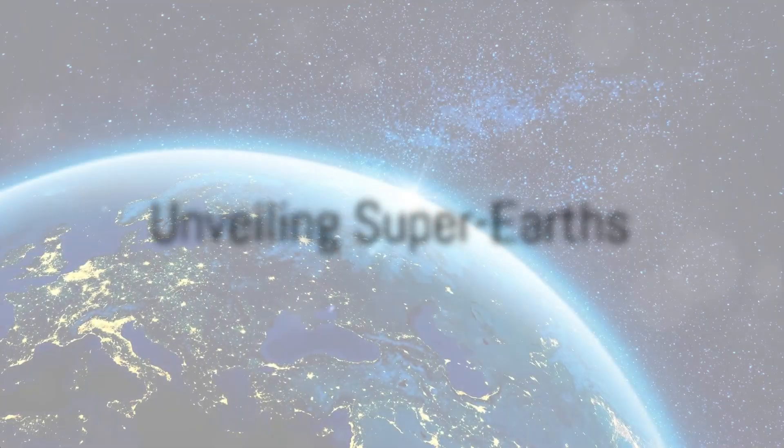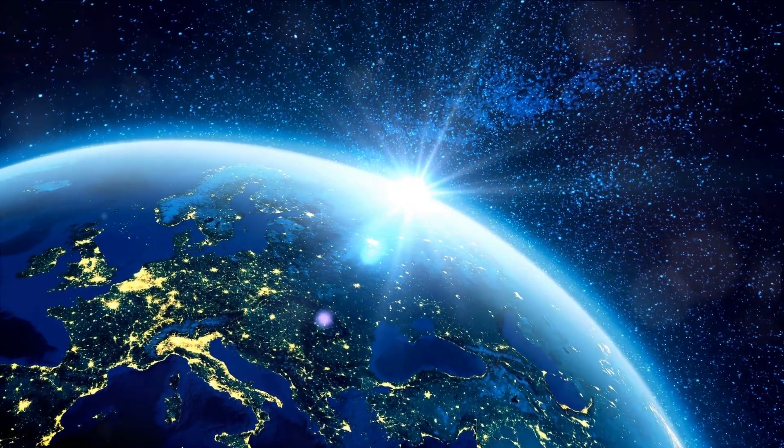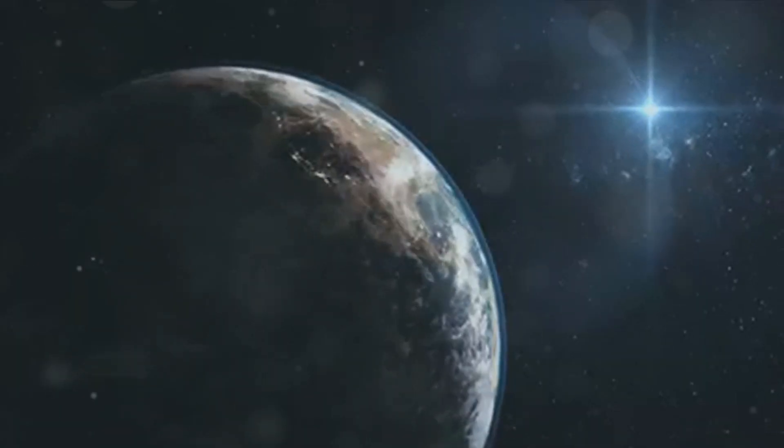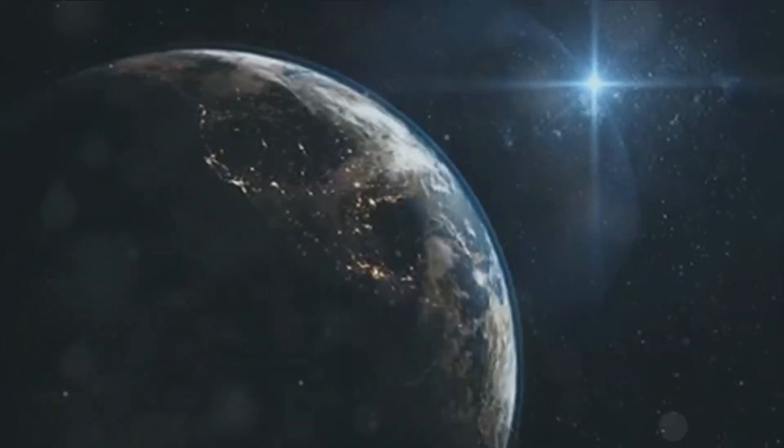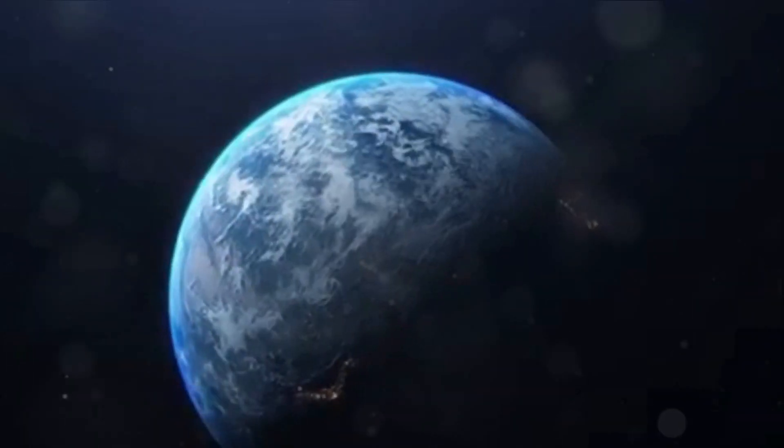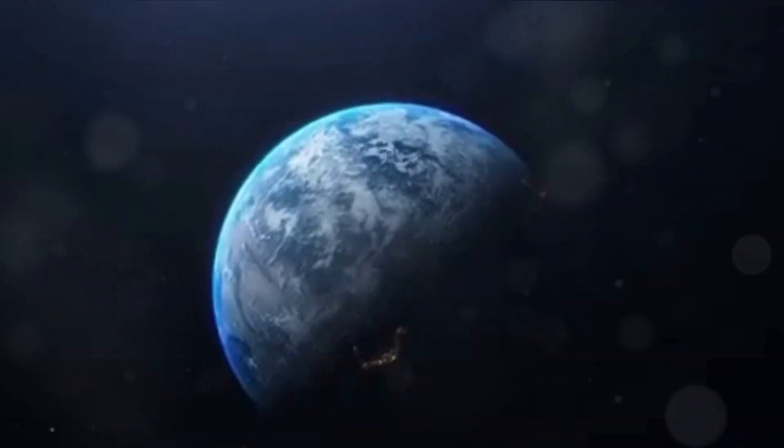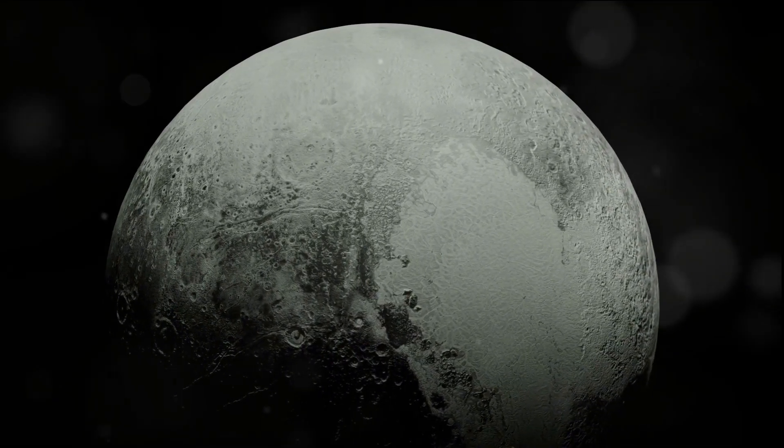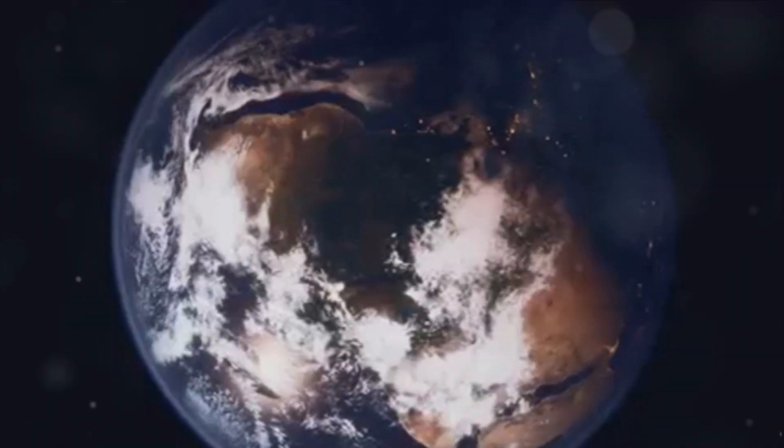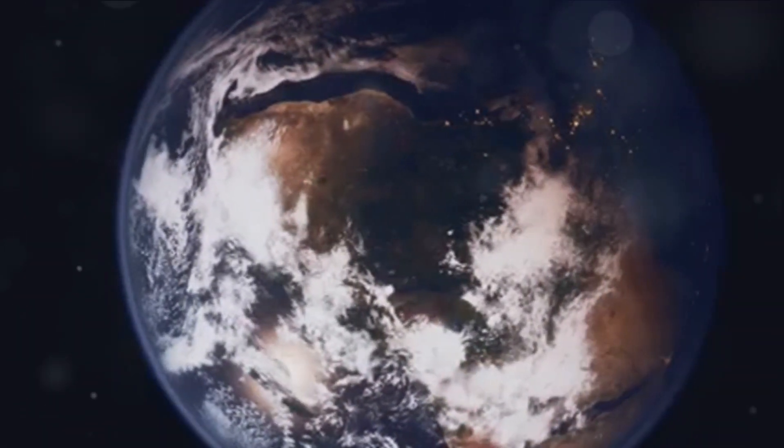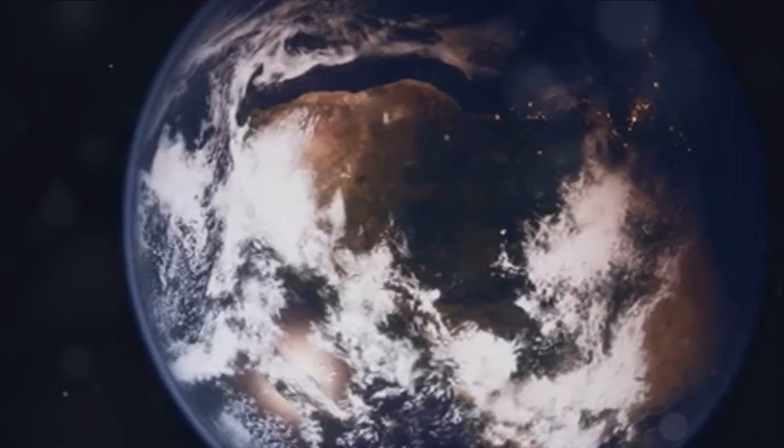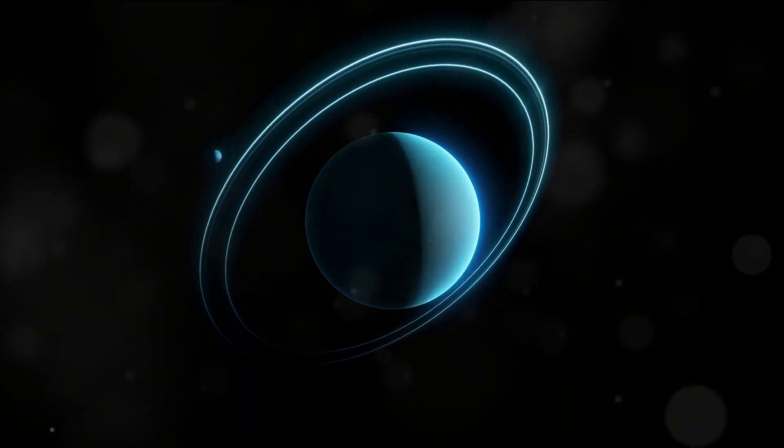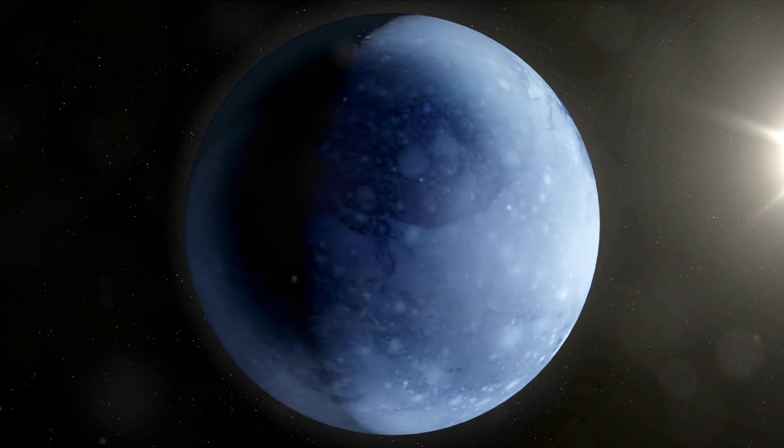TOI 1680b, a super-earth, shows us how different and yet similar exoplanets can be to our home planet. This fascinating world was discovered in 2023, and it resides a mere 120 light-years away from us. It's closer than you might think, at least on a cosmic scale. TOI 1680b is approximately 50% larger than Earth, making it a member of the intriguing class of planets known as super-earths. These are rocky exoplanets like our own, but with a mass and size that significantly exceed those of Earth. They're not quite as large as the gas giants in our solar system like Jupiter and Saturn, but they're far from small. To date, we've discovered 1,679 of these intriguing worlds.